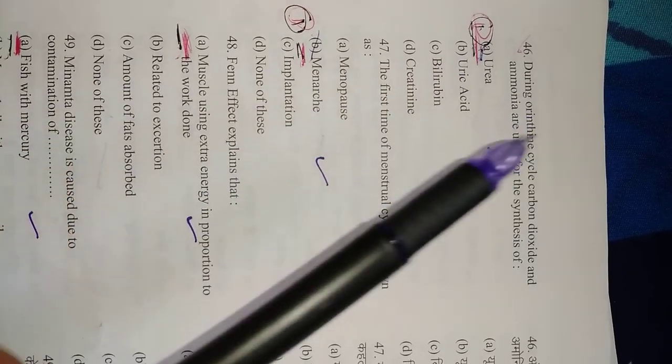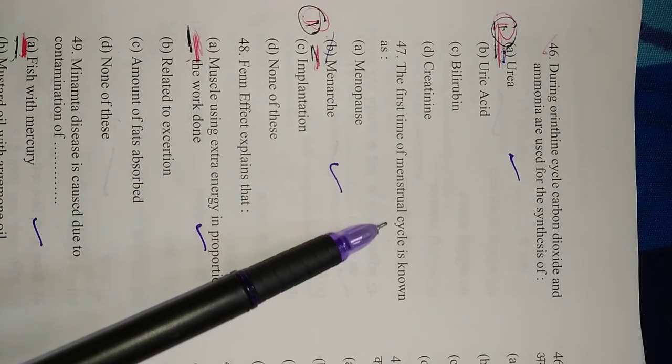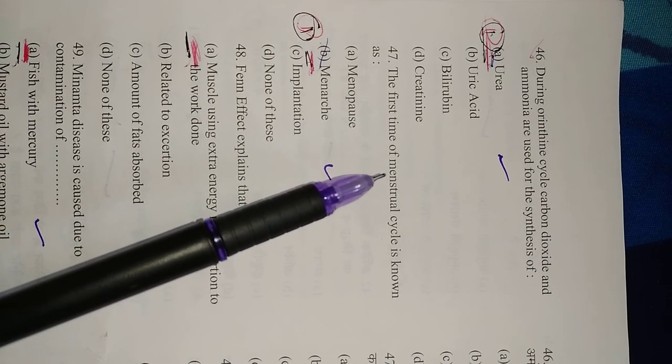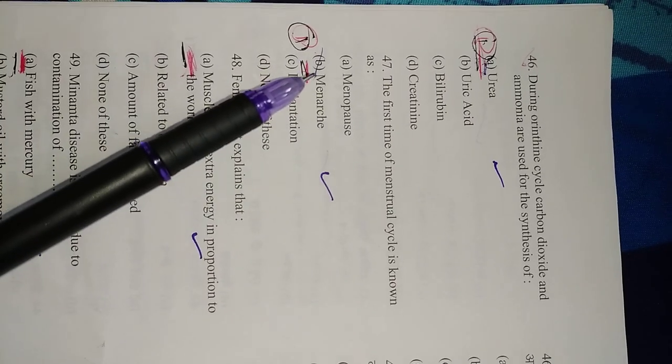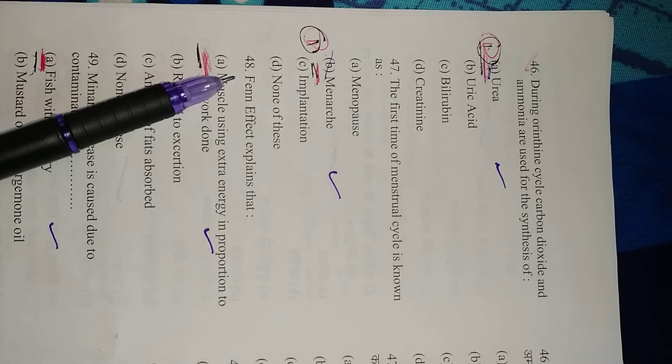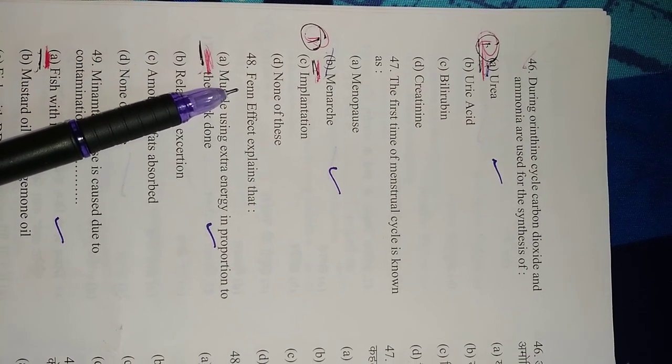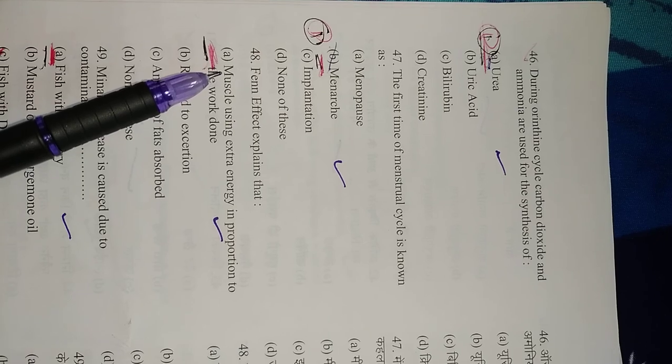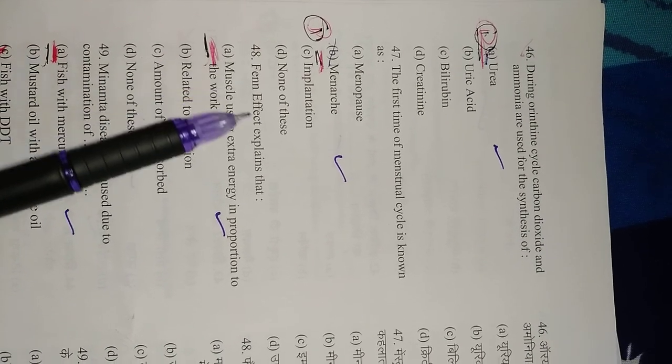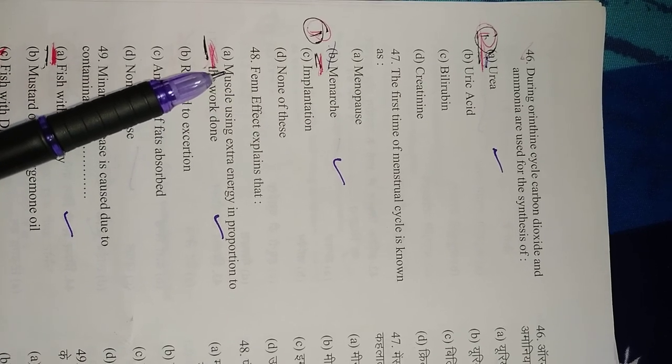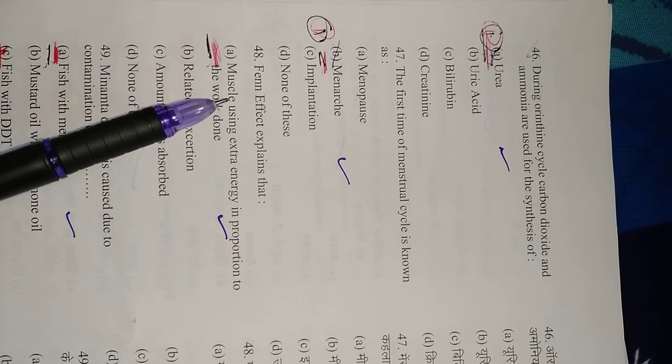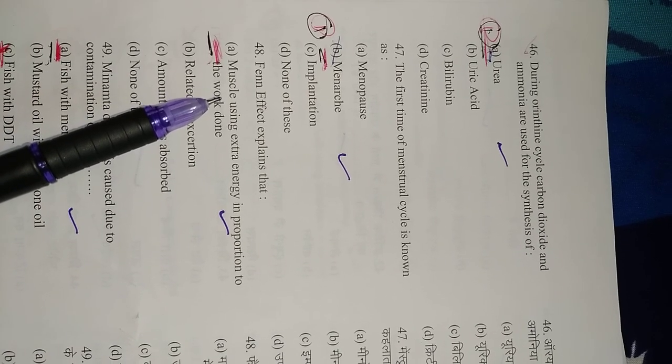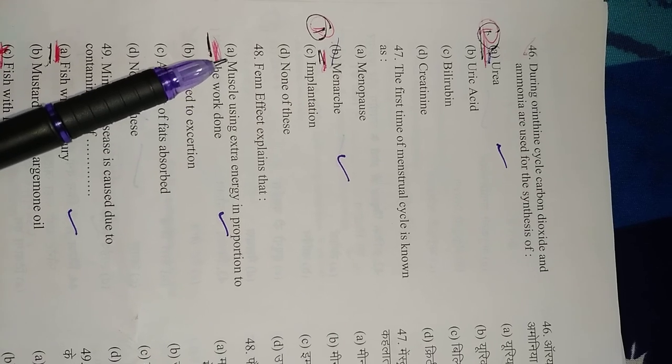Question number 47: The first time of menstrual cycle is known as menarche, and the last time of menstrual cycle is known as menopause. So here it is asked for the first time, so right option is B. Question number 48: Fenn effect explains that—Fenn effect is related with muscles. It says that there is always more extra energy liberated as heat, and that is a little more than the work done. So right option is A, muscle using extra energy in proportion to the work done.